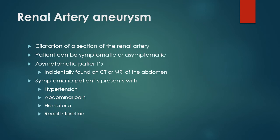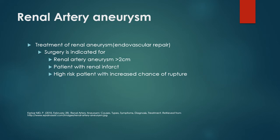Renal artery aneurysm is the dilatation of a section of the renal artery. Patients can be asymptomatic or symptomatic. Asymptomatic patients are usually incidentally found on CT or MRI of the abdomen. Symptomatic patients present with hypertension, abdominal pain, hematuria, and renal infarction. Treatment is endovascular repair. Surgery is indicated for renal artery aneurysm greater than two centimeters, patients with renal infarct, or patients with an increased chance of rupture.